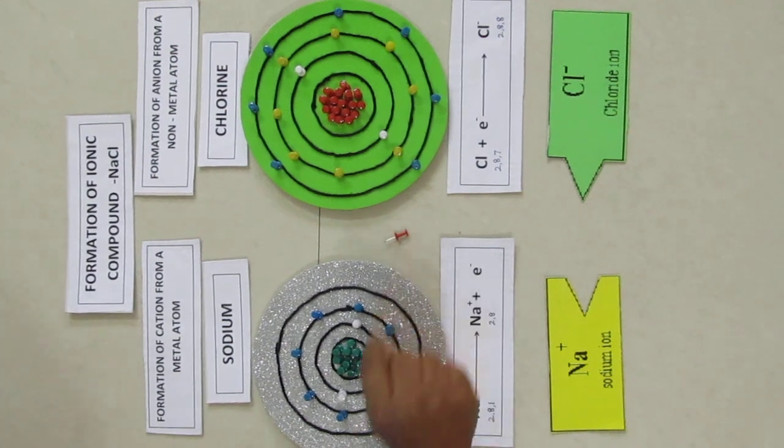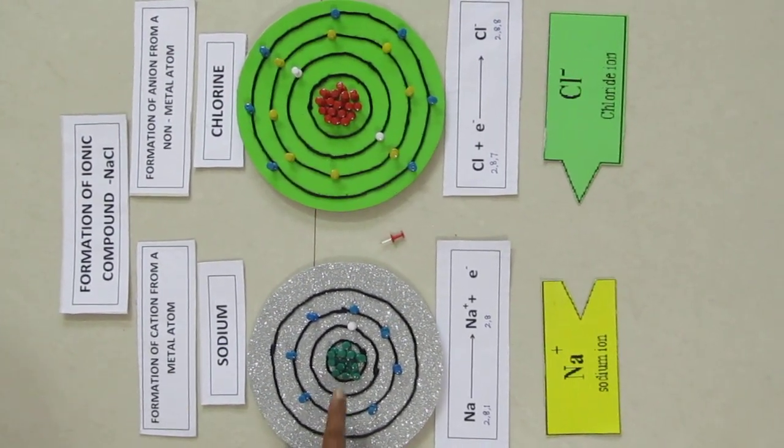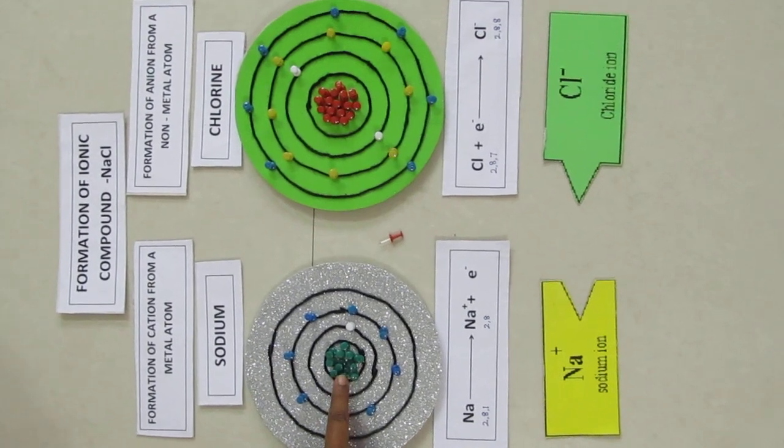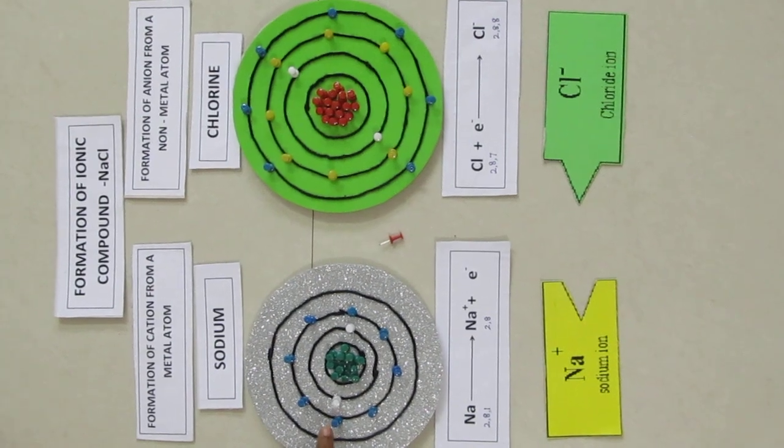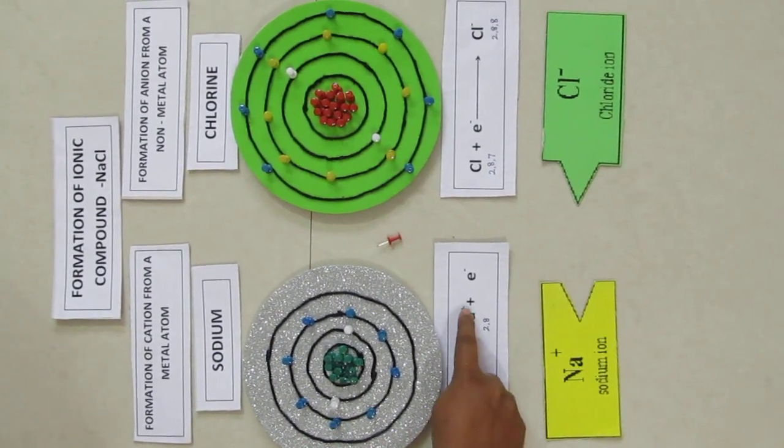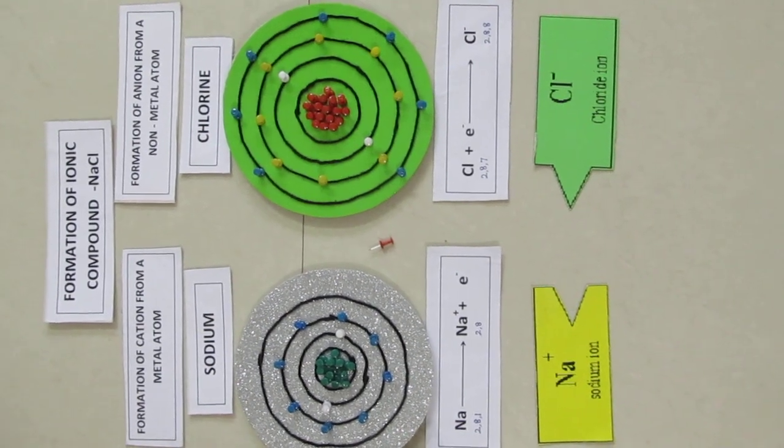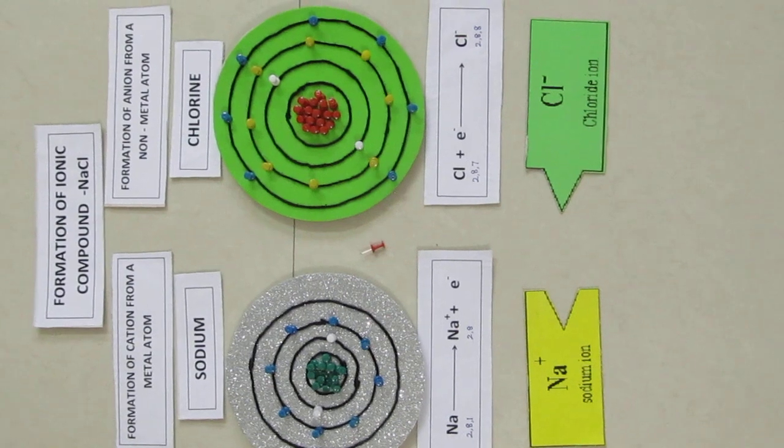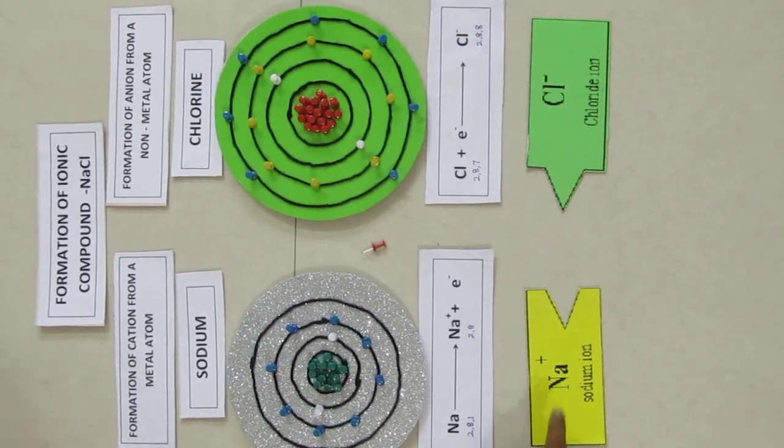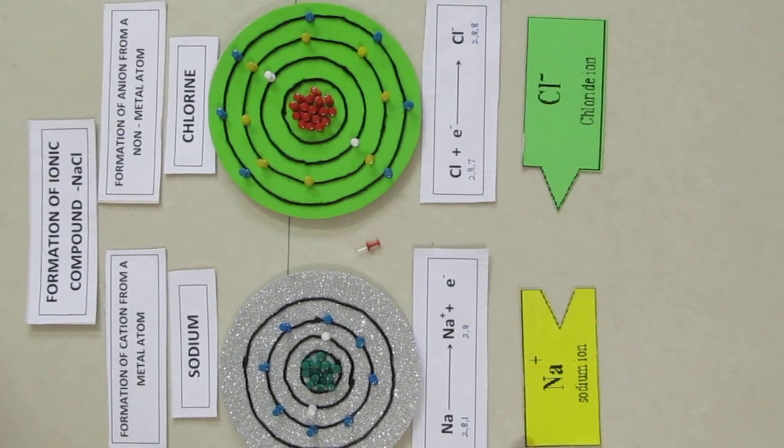After losing one electron, the atom still has 11 protons inside the nucleus, but the number of electrons has become 10. So there is a net positive charge on sodium atom, giving sodium cation. As sodium loses its one electron, the combining capacity, that is its valency, has become one.